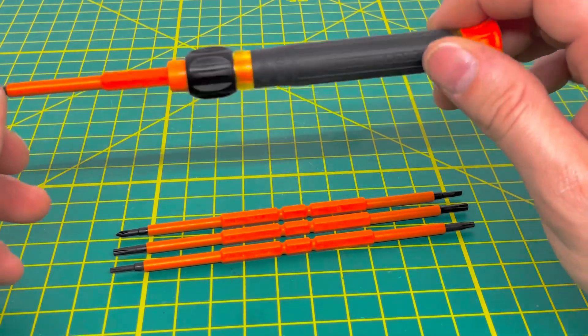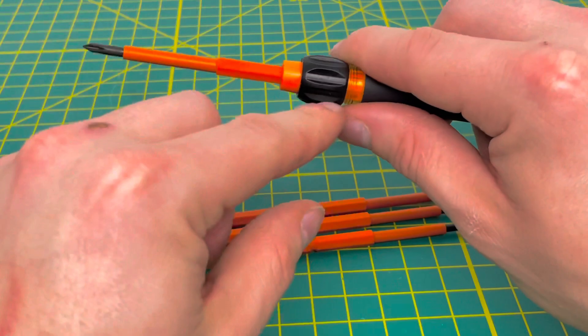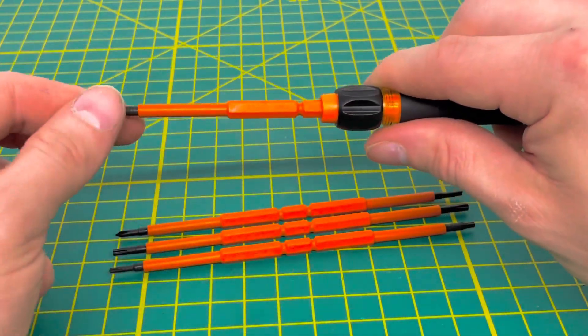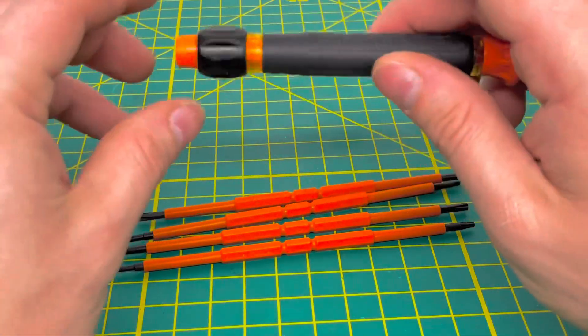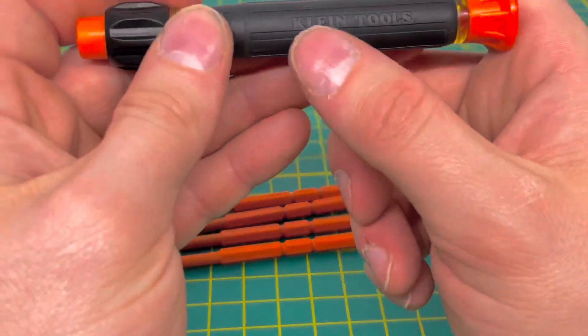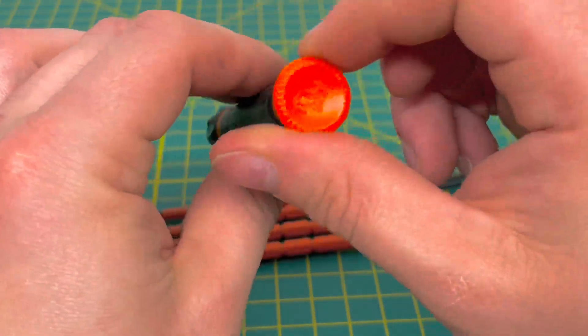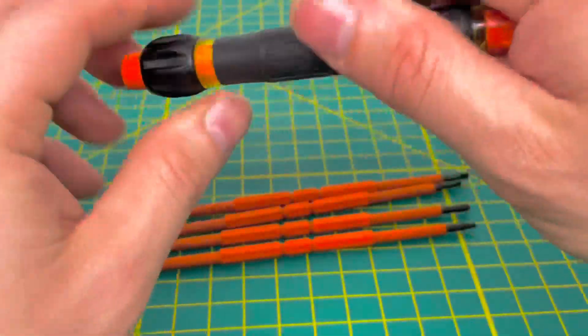This is the screwdriver itself. To eject the bit, push up on that and it ejects. Taking a look at the handle, you have the Klein Tools name on the grip. I really like how they include the spinner handle, that spinner top on here.